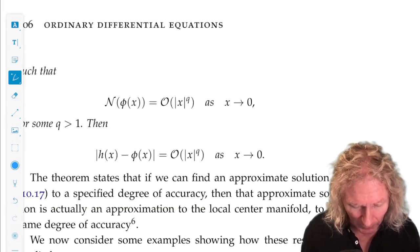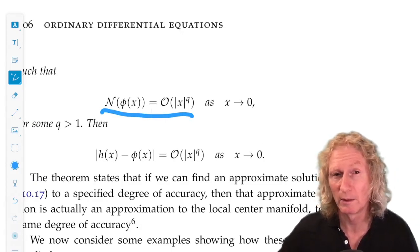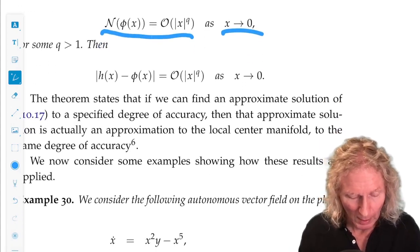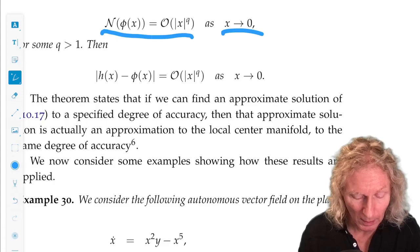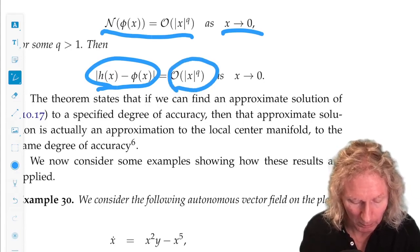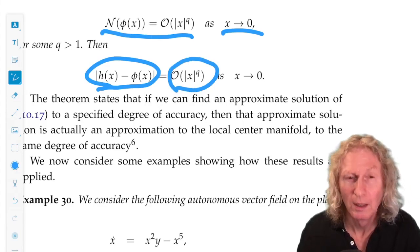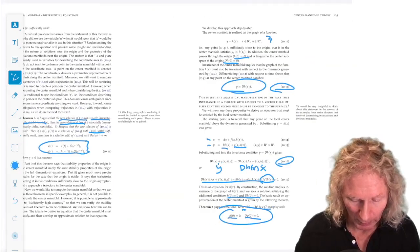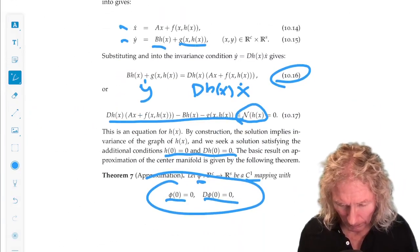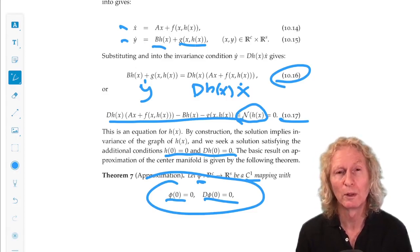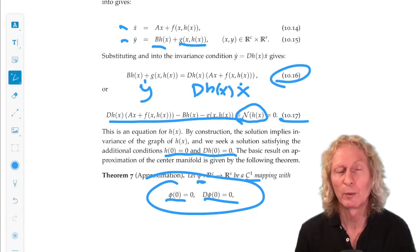then, it actually is an approximation to the center manifold, the same degree of approximation. Okay, so all we need to do is find an approximate solution to this messy-looking equation, and that tells us that we actually have a function that approximates the true center manifold to the degree of approximation according to the theorem.